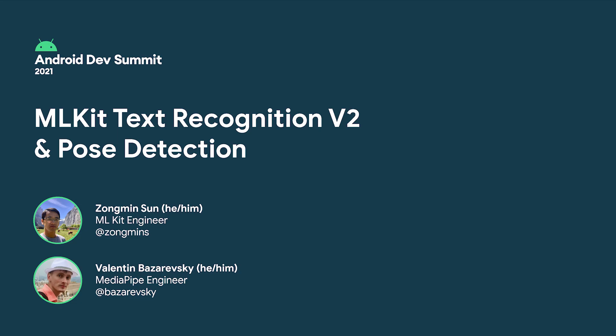Hello everyone, welcome. I'm Tsung-Ling Sun, a software engineer on Google ML Kit. Together with my colleague Valentin, we're going to go behind the scenes on two of the most popular APIs from ML Kit: Text Recognition V2 and Pose Detection.